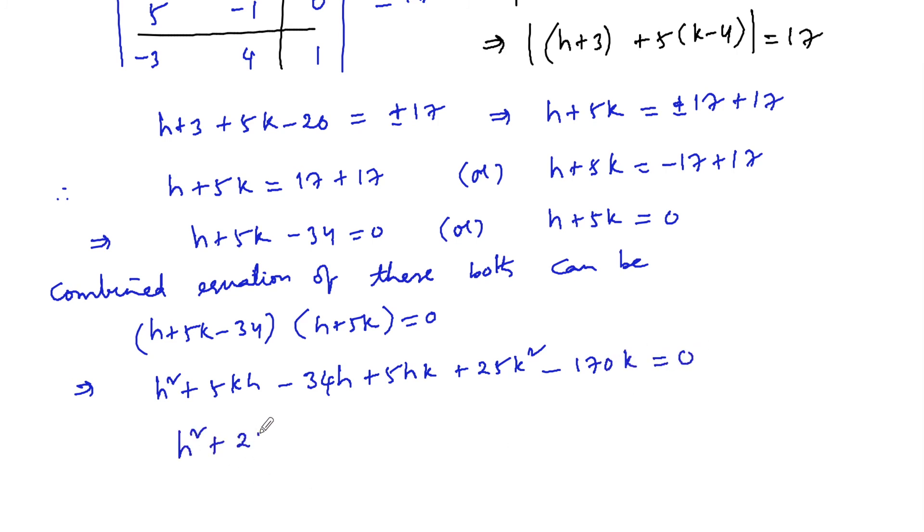H plus 5KH, plus 10KH. And minus 34H, minus 170K, which is equal to 0.